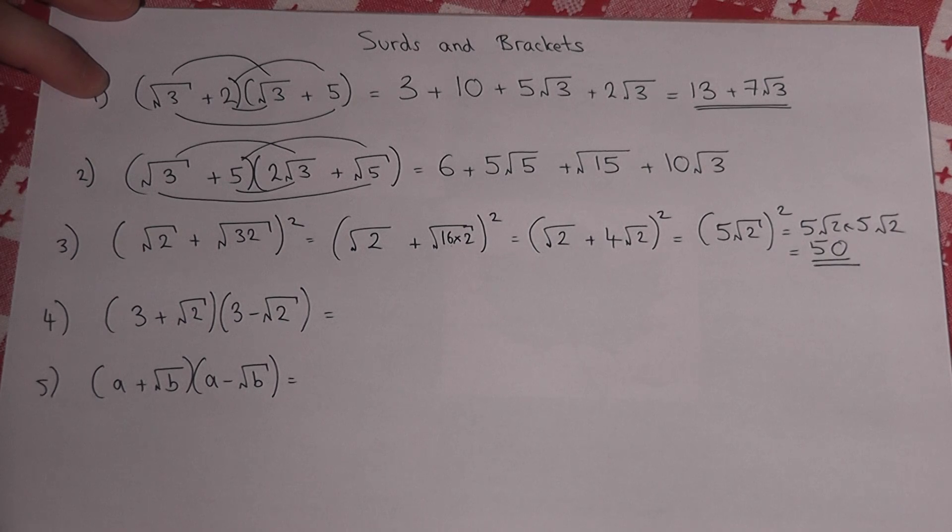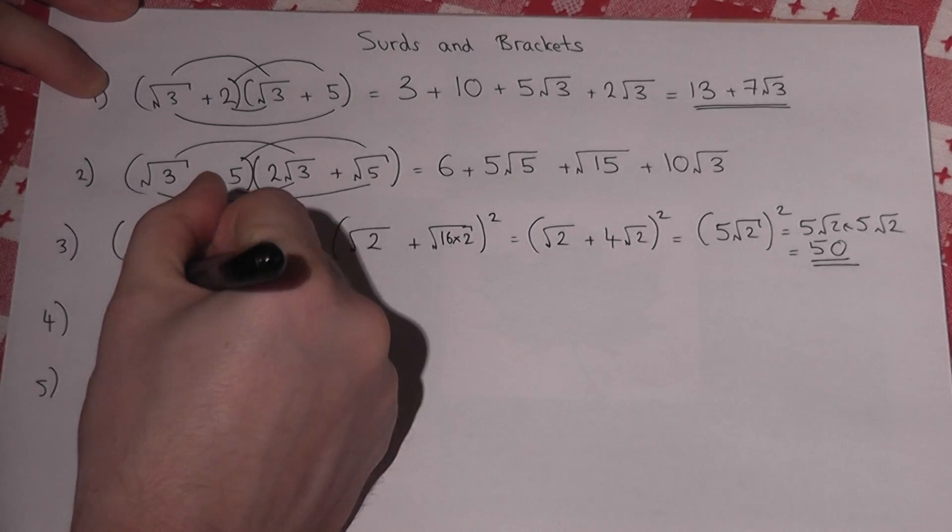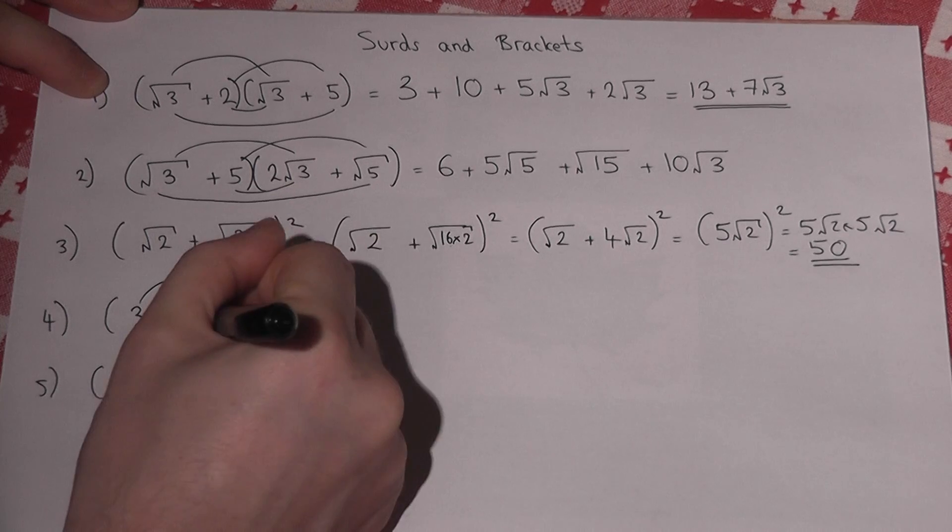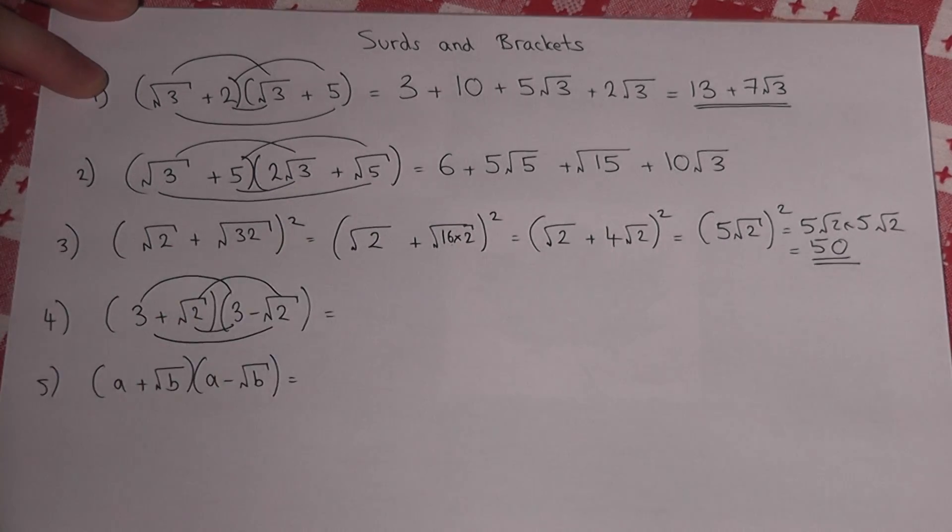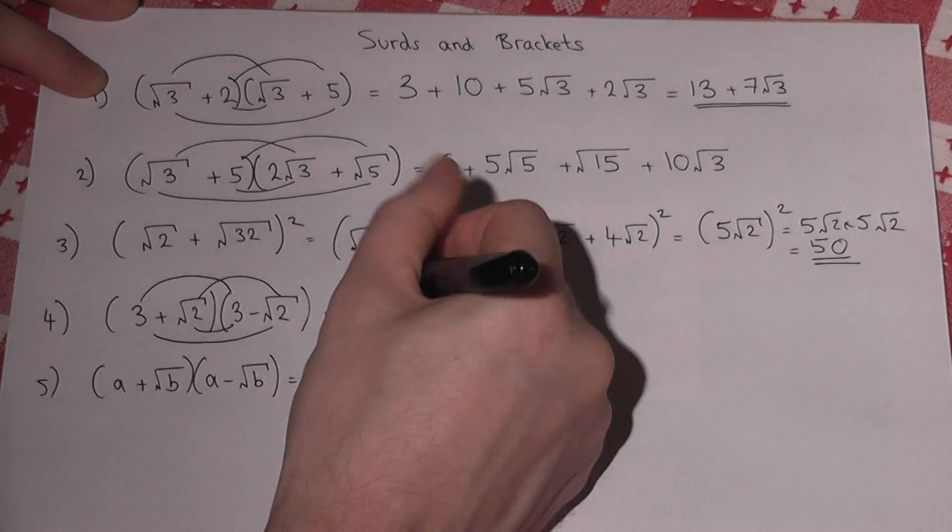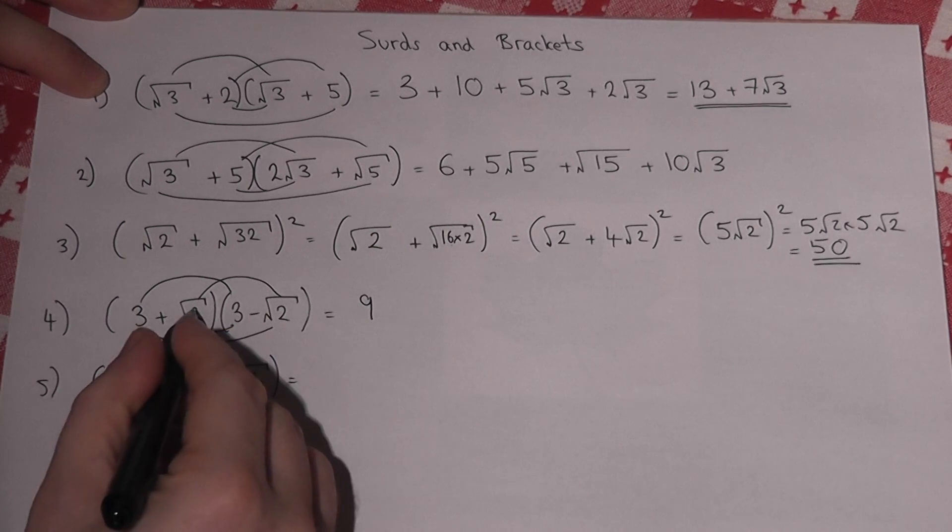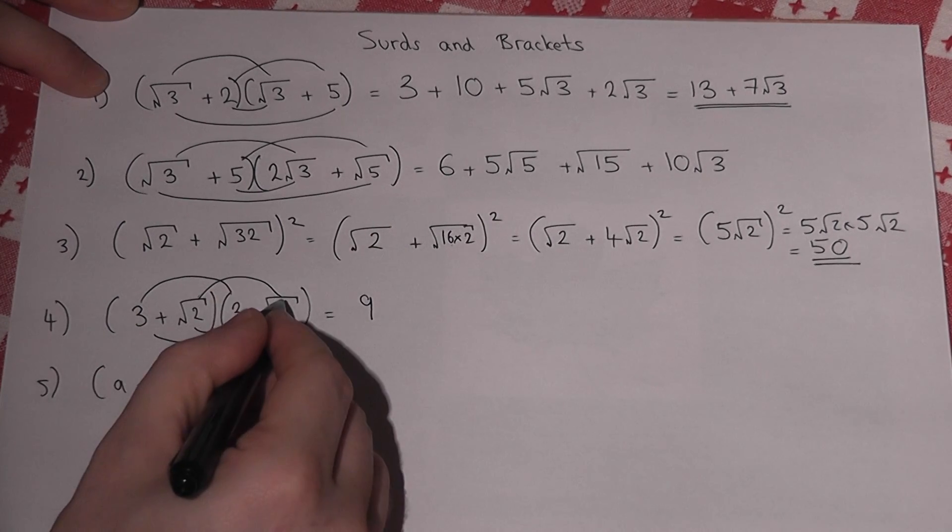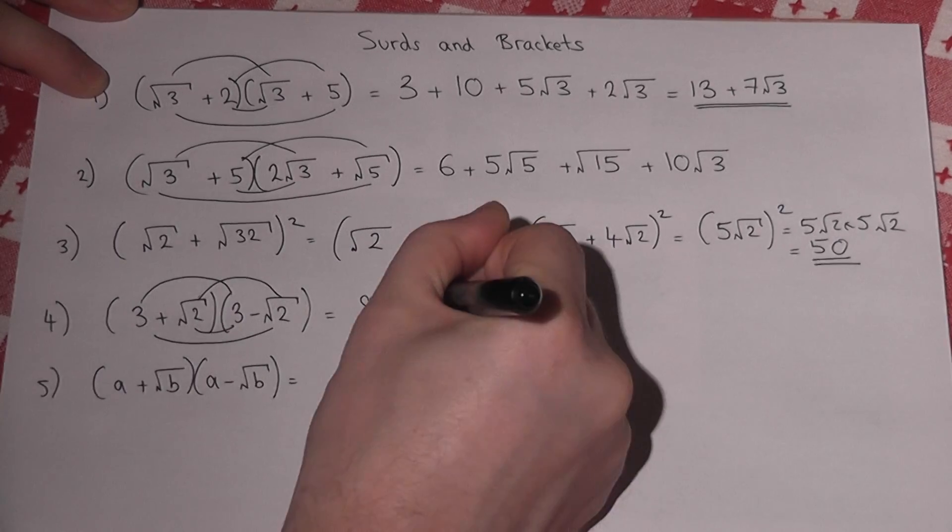Now the fourth one is a special case. If we draw our lines again to show what to times together, well 3 times 3 is 9, root 2 times root 2 is 2, so it's just minus 2.